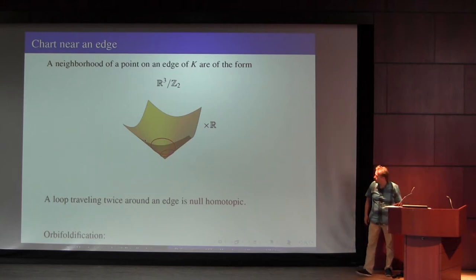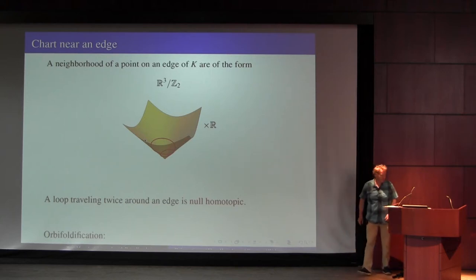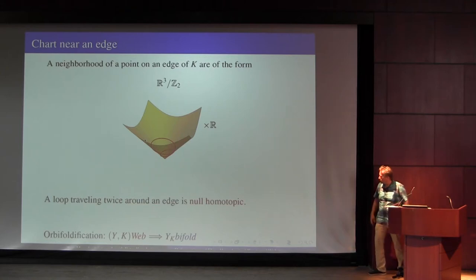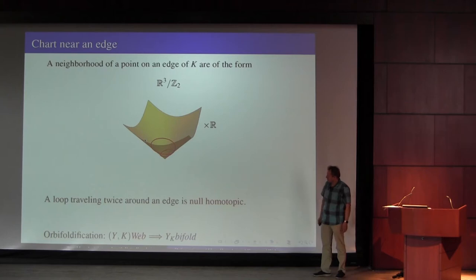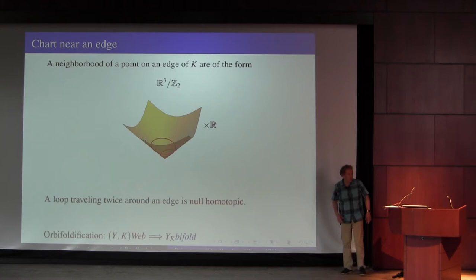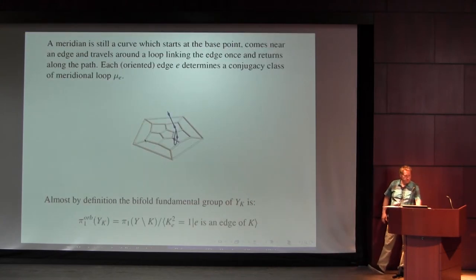We might call this process orbifoldification. To each web we can get an orbifold — and sometimes in the paper we call them bifolds, because the orbifold structure is very special: they're only cone angles π. That's why they're called bifolds.